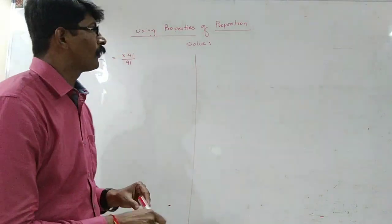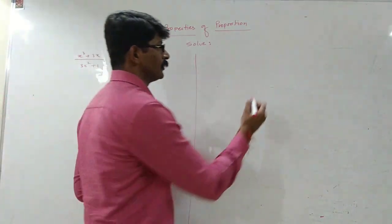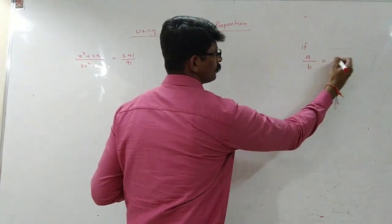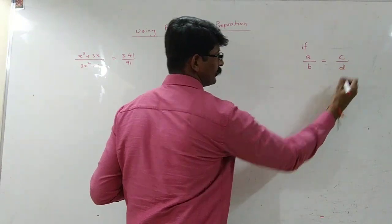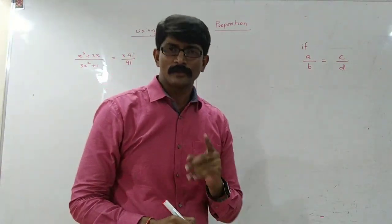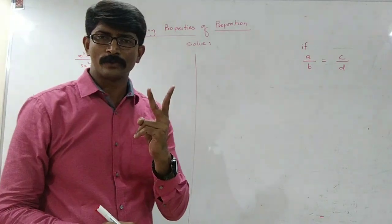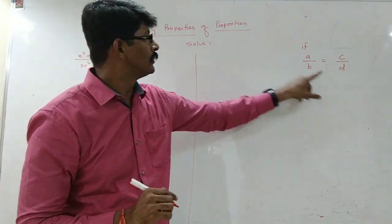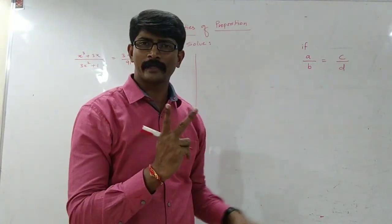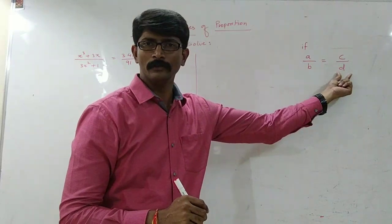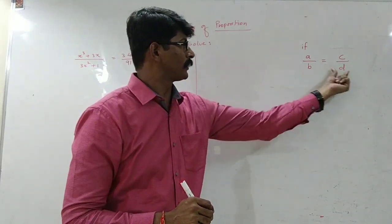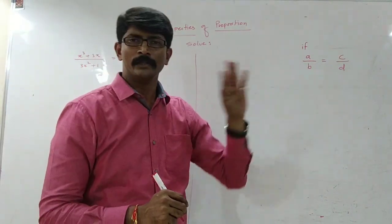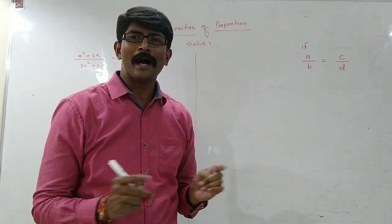We have the following 5 properties of proportion. Say suppose A upon B is equal to C upon D. First of all, students, you must know what proportion is. Whenever two ratios are equal — A upon B is one ratio, C upon D is the second ratio — when the two ratios are equal, we say the four quantities A, B, C, D are in proportion.